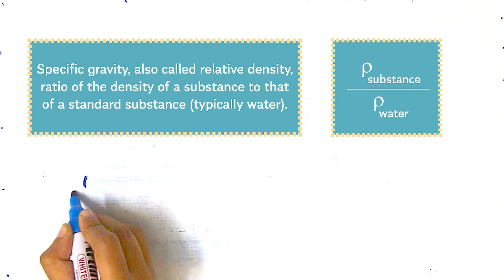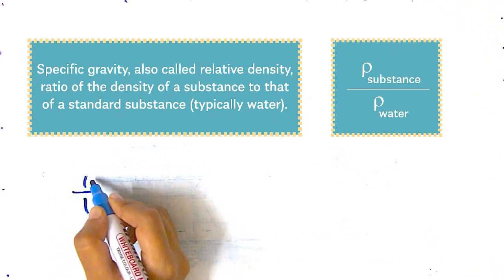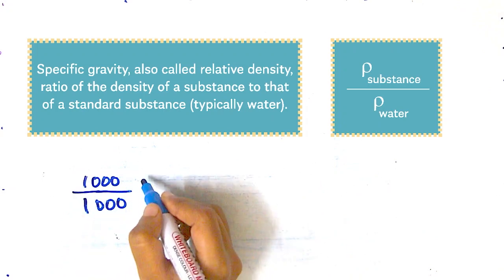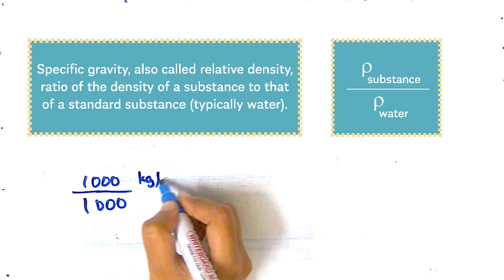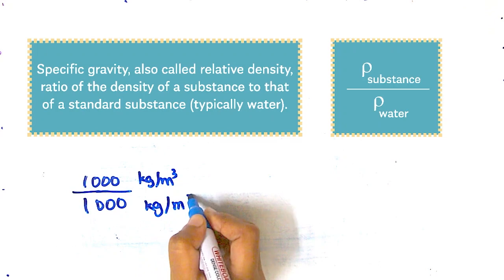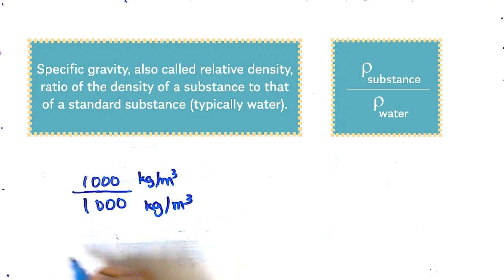That would be one divided by one, or 1000 divided by 1000 in kilograms per meter cube. This does not have any units because the units would just be cancelled out. The specific gravity for water would just be one.